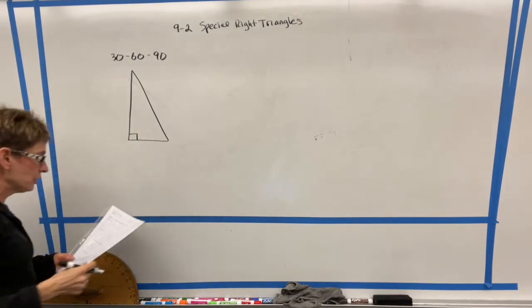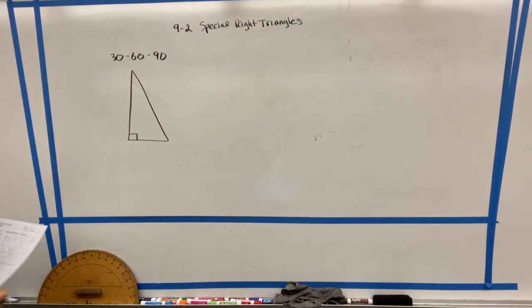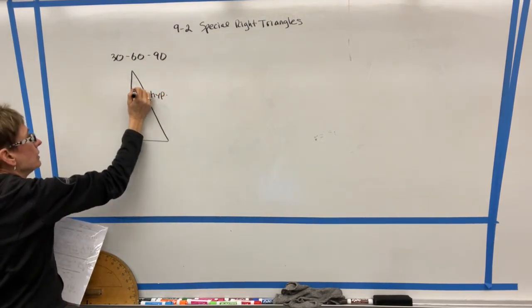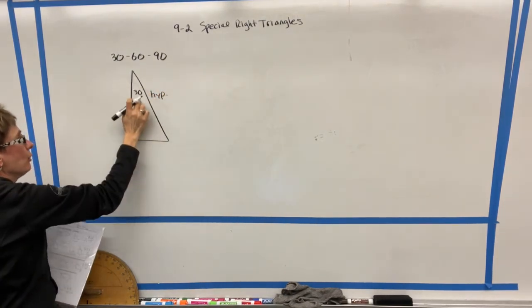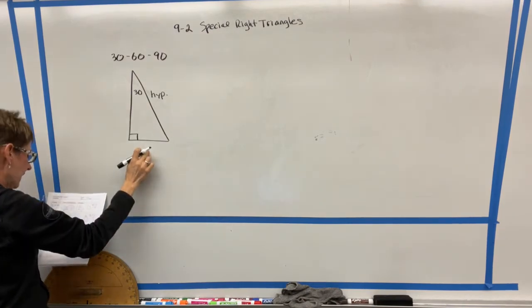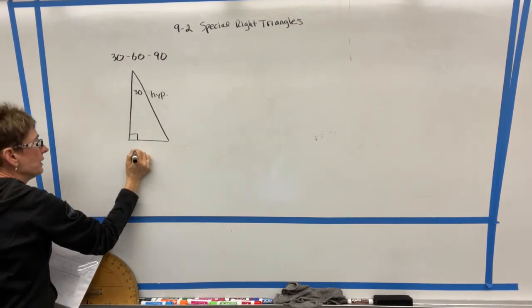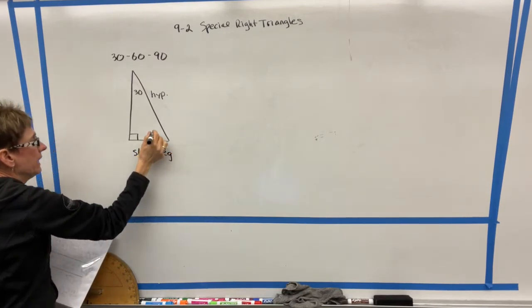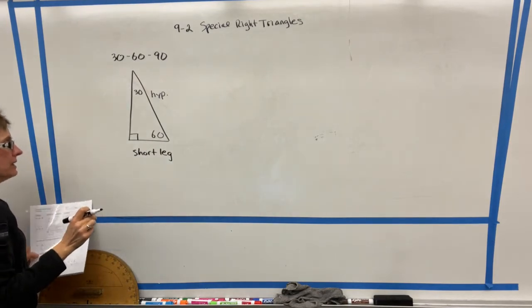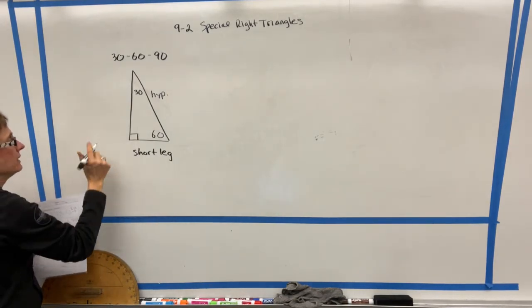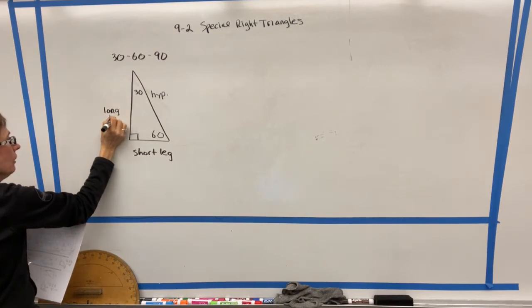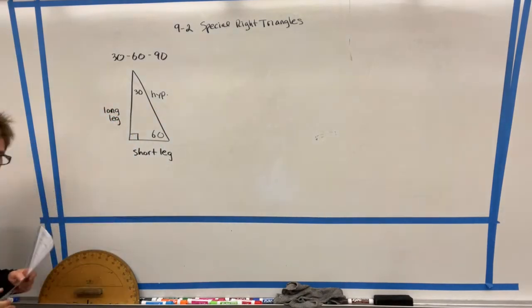Now, the interesting thing is we do have specific names for each of the sides. This side is called the hypotenuse. The side across from the smallest angle is going to be the shortest side. So we're going to call this one the short leg. And the side across from the medium angle is going to be longer than that. So we're going to call that the long leg. We can call it the long leg because we don't refer to the biggest side as a leg. We just call it the hypotenuse.